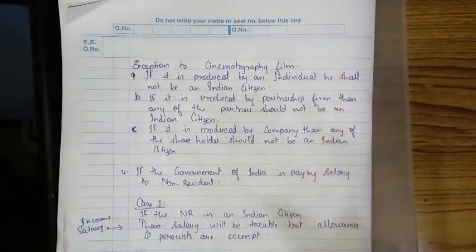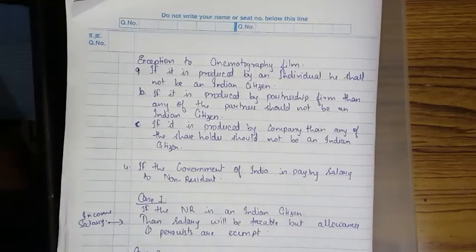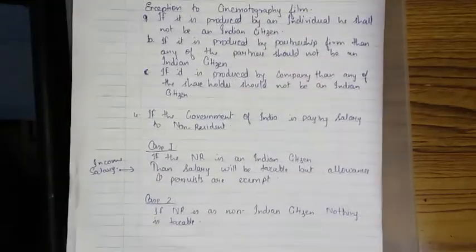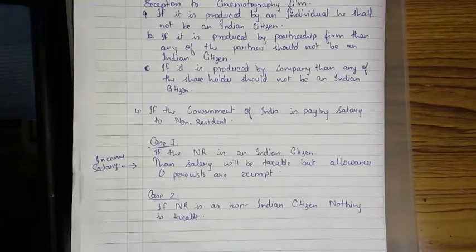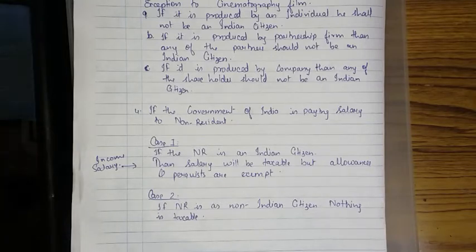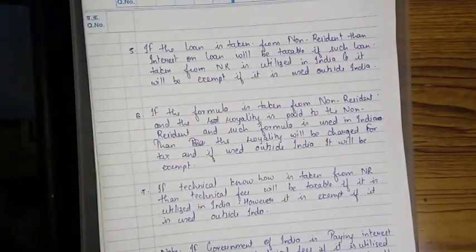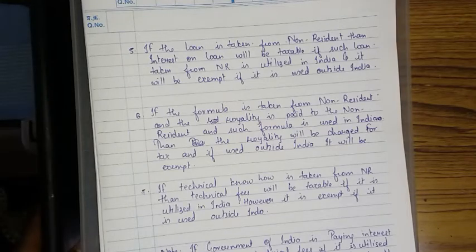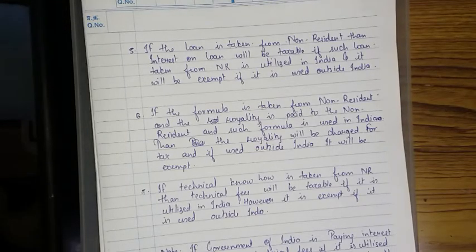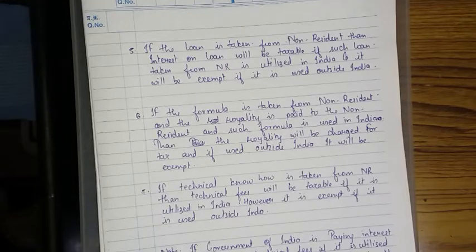If the government of India is paying salary to a non-resident: Case 1 — if the non-resident is an Indian citizen, the salary is taxable but allowances and perquisites are exempt. Case 2 — if the non-resident is a non-Indian citizen, nothing is taxable. If a loan is taken from a non-resident and utilized in India, interest on loan will be taxable; if used outside India, it is exempt. If royalty is paid to a non-resident on a formula used in India, the royalty is taxable; if used outside India, it is exempt.